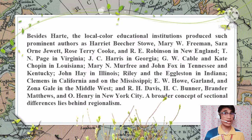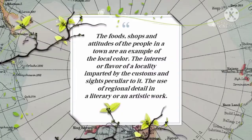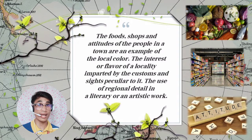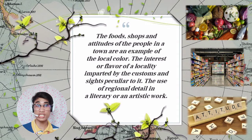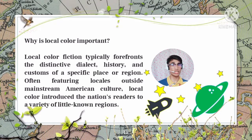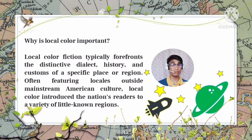A broader concept of sectional differences lies behind regionalism. The food, shops, and attitudes of the people in a town are an example of local color — the interest or flavor of a locality imparted by the customs and sites peculiar to it, including the use of regional detail in a literary or artistic work. Local color fiction typically foregrounds the distinctive dialect, history, and customs of a specific place or region, often featuring locals outside mainstream American culture, introducing the nation's readers to a variety of little-known regions.